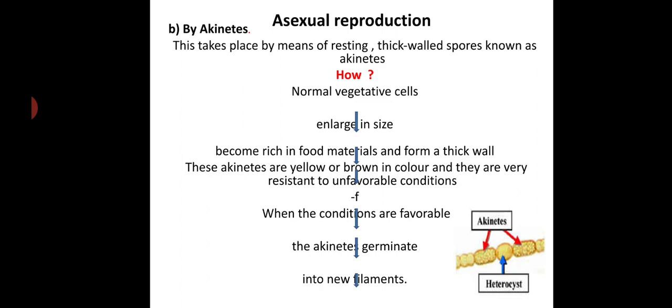Asexual reproduction takes place by means of akinetes. This takes place by means of resting, thick-walled spores known as akinetes. Normal vegetative cells enlarge in size, become rich in food materials, and form a thick wall. These akinetes are yellow or brown in color, and they are very resistant to unfavorable conditions. When the conditions are favorable, the akinetes germinate into new filaments.